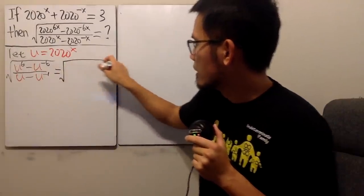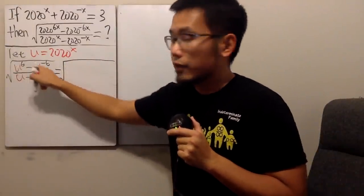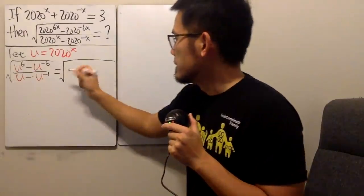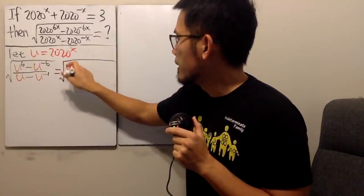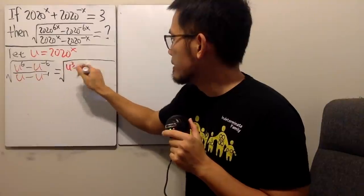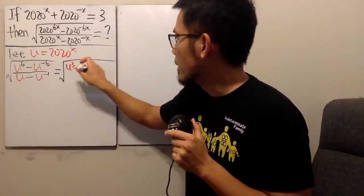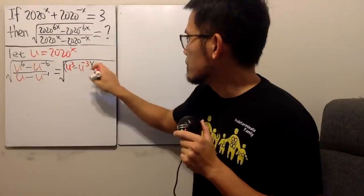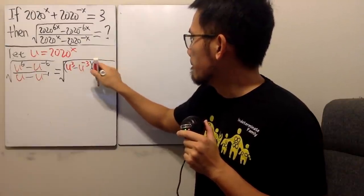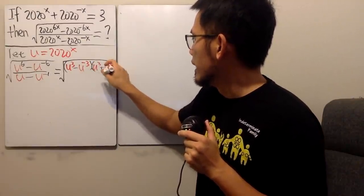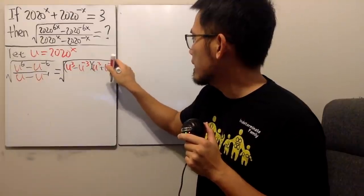Anyway, here we are going to look at this as the following. We will just break this down. So difference of two squares. That means the first term is u to the third power, and then we have minus u to the negative third power. And then we have another one which is u to the third power plus u to the negative third power.